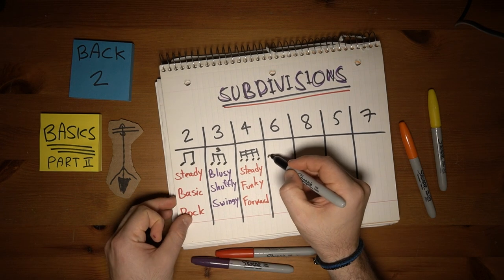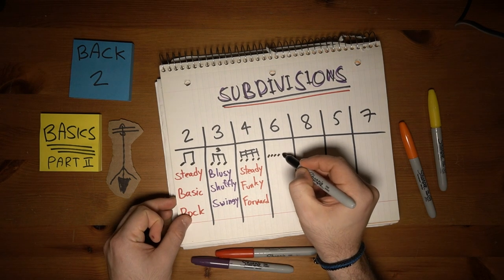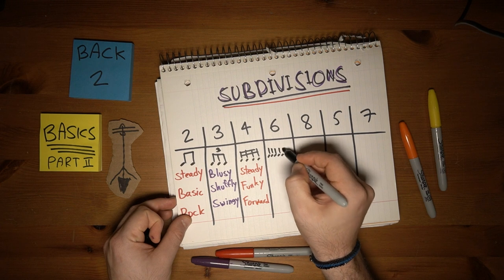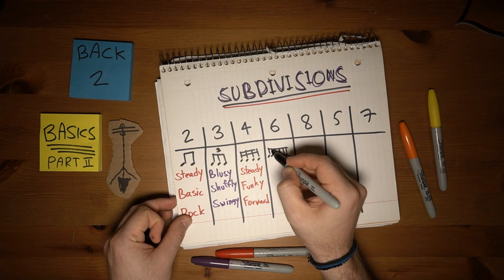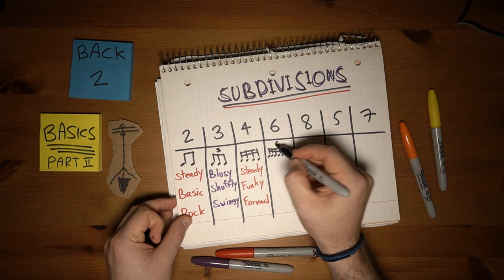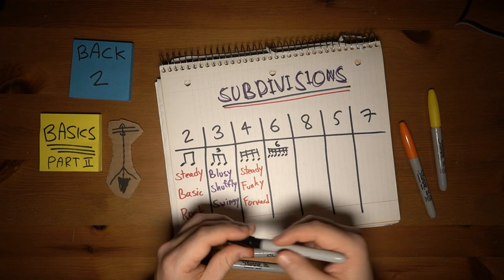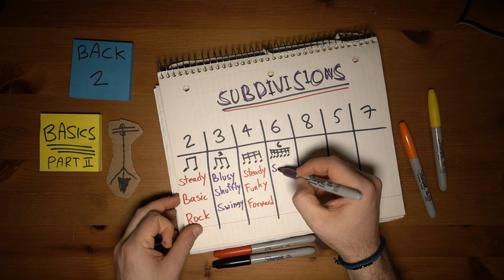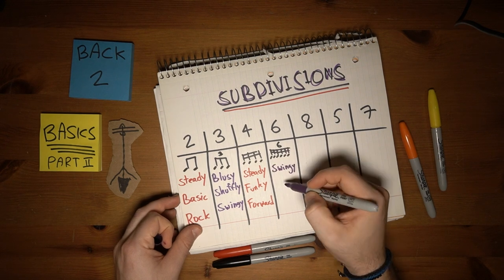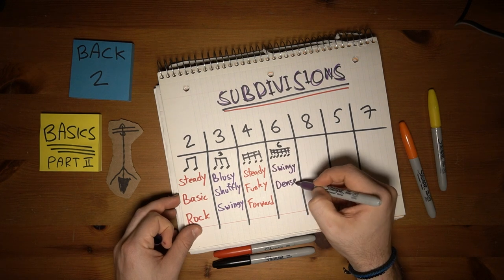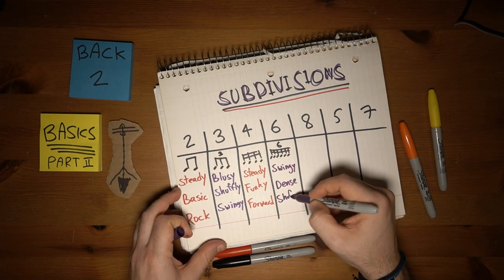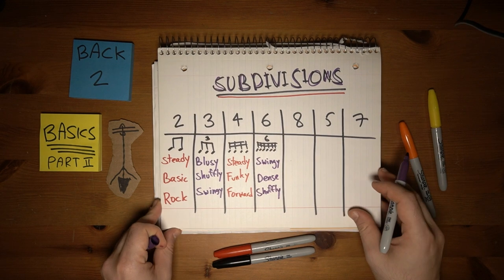Dividing a note into 6 equal beats is called a sextuplet, or 16th note triplets. I'm getting a swingy, shuffly kind of vibe again, but this one is a bit denser and a bit quicker.